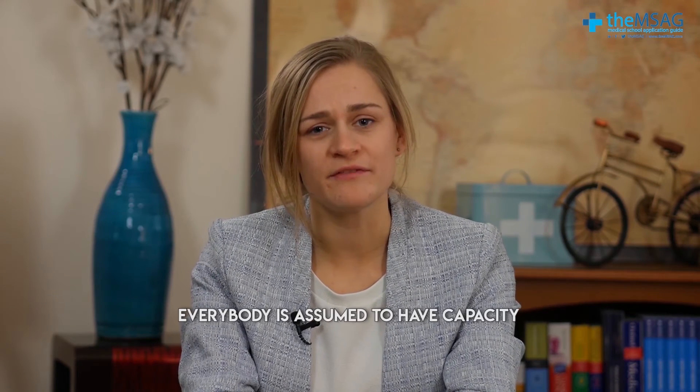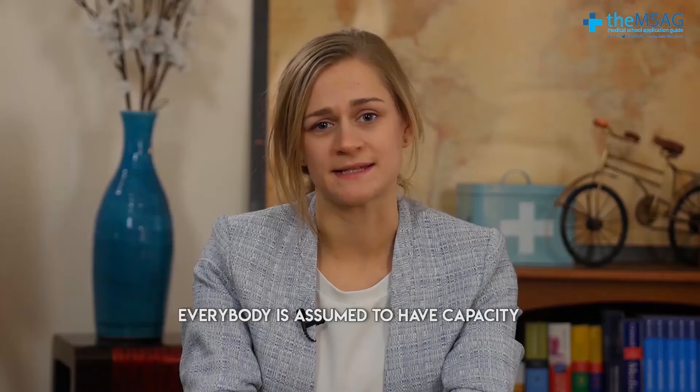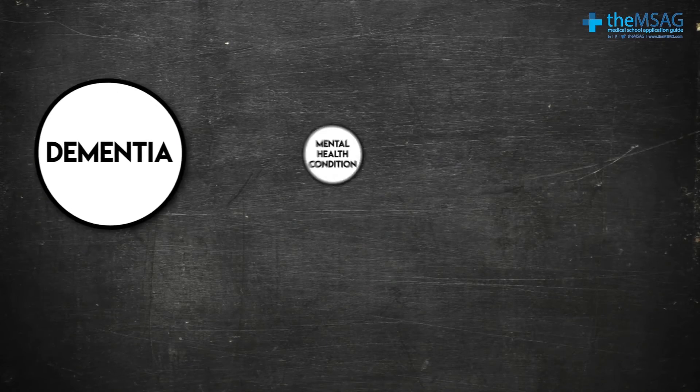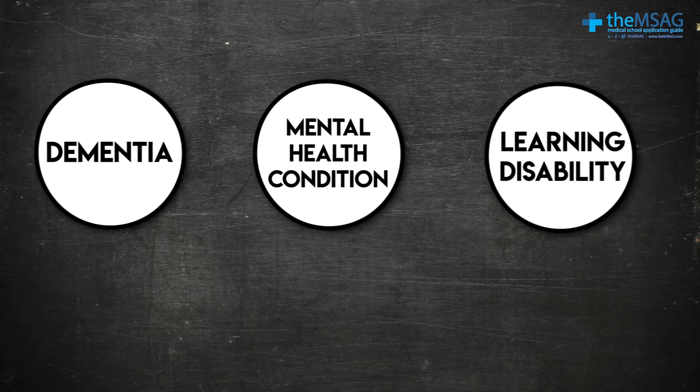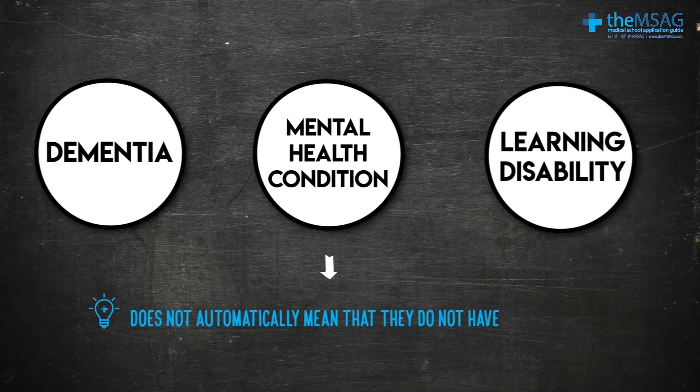One final and really important point regarding capacity is that everybody is assumed to have capacity unless proven otherwise. Therefore, just because someone has dementia, a mental health condition, or a learning disability, does not automatically mean that they do not have capacity. And even if they do lack capacity for healthcare matters, they may still have the capacity to make other decisions, such as what to have for dinner, for example.